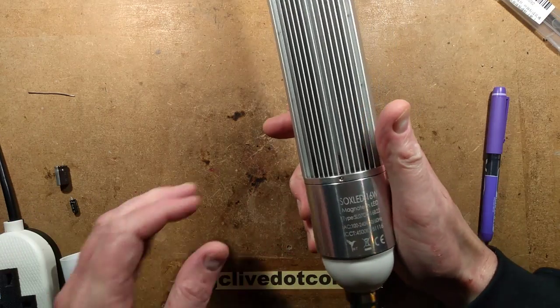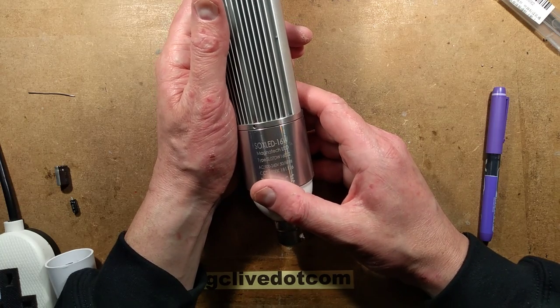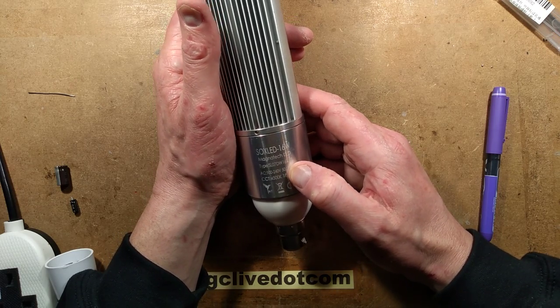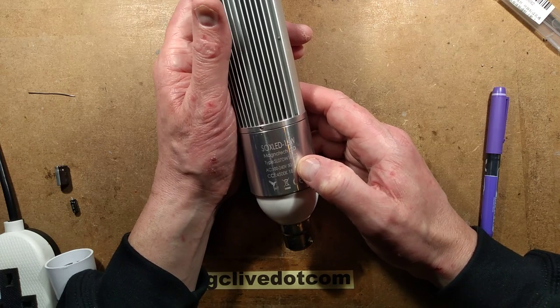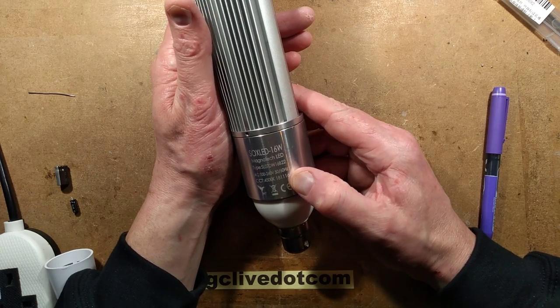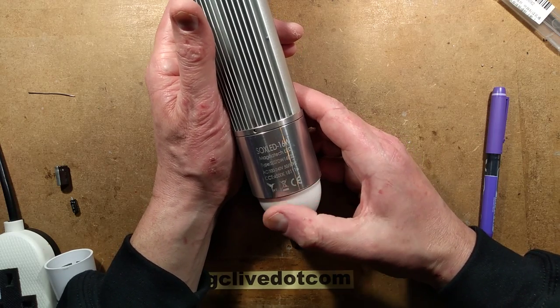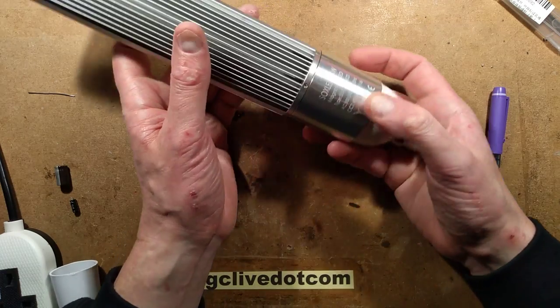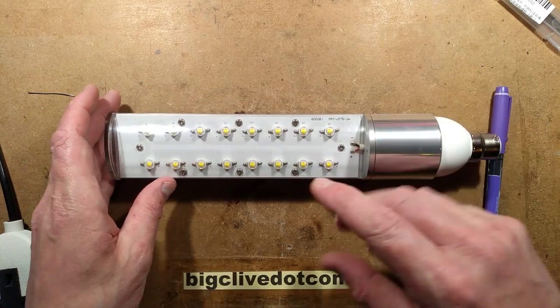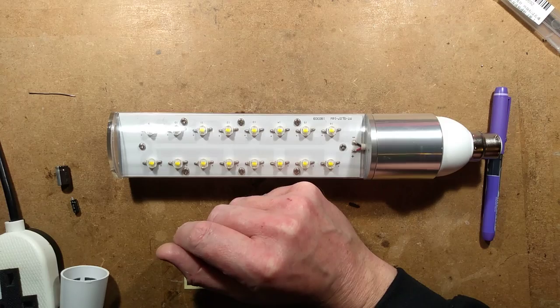Who makes this lamp? Sox LED 16 watt Magnatec LED, type SLO7D W16B22. B22 being the bayonet cap 22. W16, that'll be the wattage. AC 102-240 volts, universal, 50-60 hertz. Colour temperature 4,500 K. CE for European compliance. It's a neat enough lamp. It's serviceable. I've just fixed the power supply on that. You could also change the LEDs, but there is a point you have to say at what point does it become economically viable.